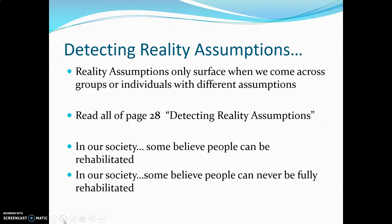In detecting reality assumptions, this is described very well on page 28 of the textbook. It begins with the thought that in our society, some people believe that you can be rehabilitated, and in our society, some people believe that you can never be fully rehabilitated. This is something to think about in terms of what we believe in our society, and what you believe about a particular issue within our society.